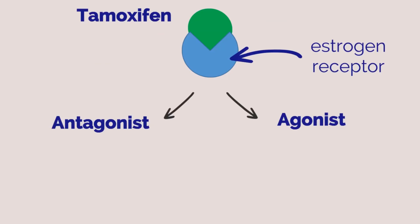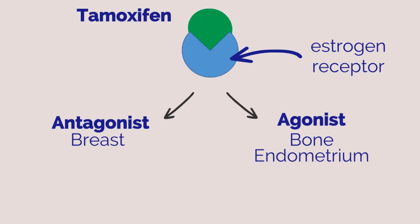A common SERM is tamoxifen. It has an antagonist effect in breast tissue, making it protective against invasive breast cancer, but has agonist effect on bone, which makes it protective against bone loss, and agonist activity on the endometrium. This is why women on tamoxifen are at higher risk for development of endometrial polyps, hyperplasia, and cancer.